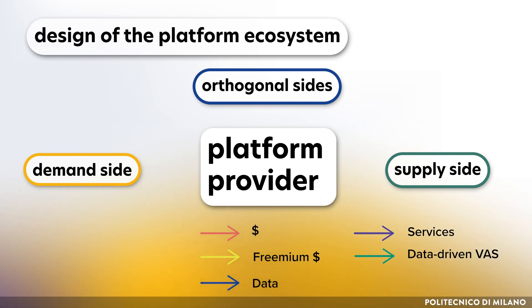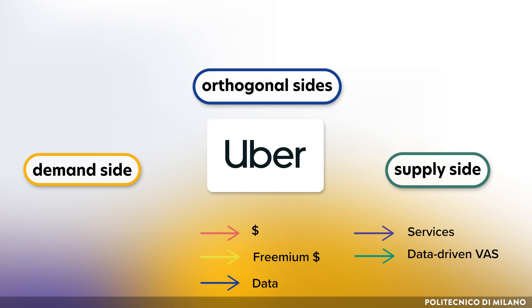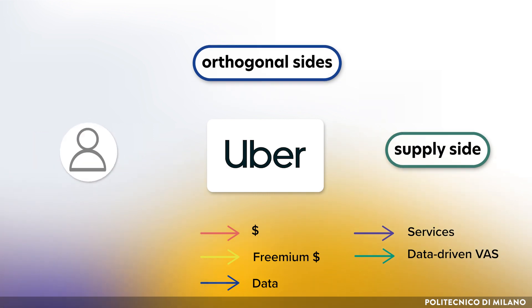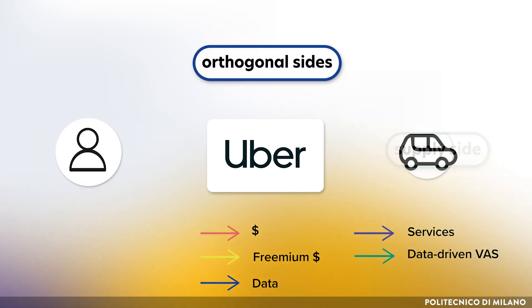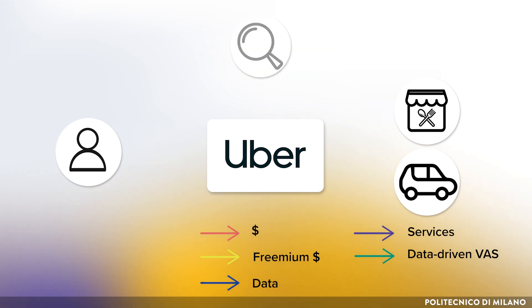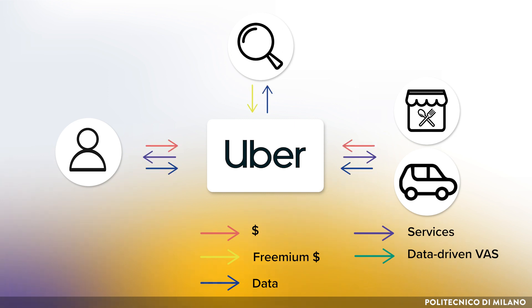As an example, to understand the tool better, we could map Uber with the following sides: end users as demand-side, drivers as supply-side, restaurants as another supply-side, research centers as customers of Uber Movement, and map the kind of relationship that exists between them.